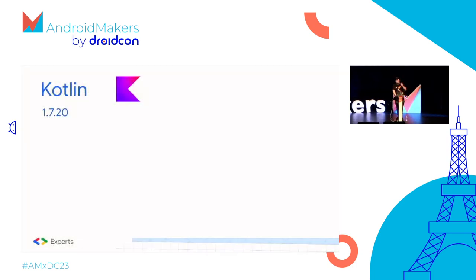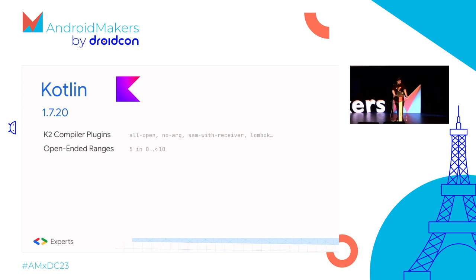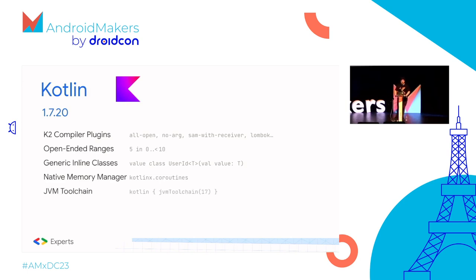We saw the release of Kotlin 1.7.20. While K2 has been introduced as a compiler it's still in alpha. This introduced compatibility with AllOpen, NoArg, SamWithReceiver, and Lombok — because Lombok's still a thing. Improvements to open-end ranges using the less-than operator instead of until. Generic inline classes where you can add a generic type parameter to a value class. The native memory manager to improve Kotlin native and coroutines support, and the introduction of the JVM toolchain.